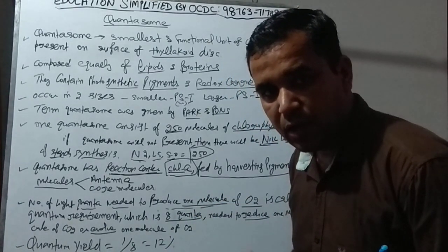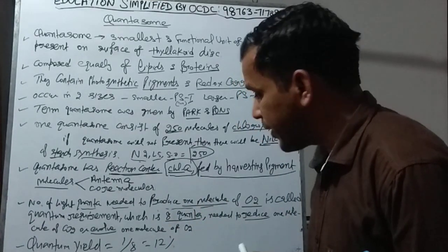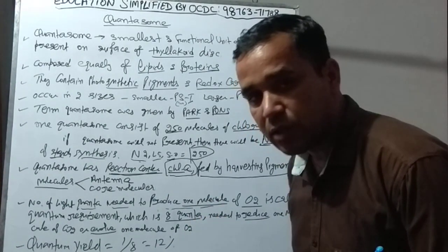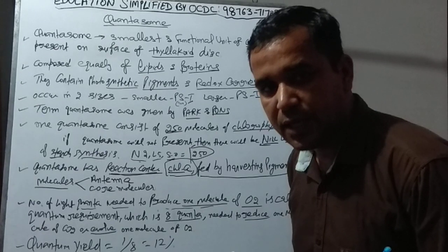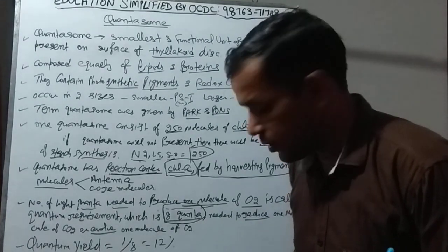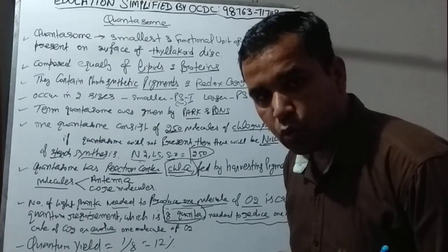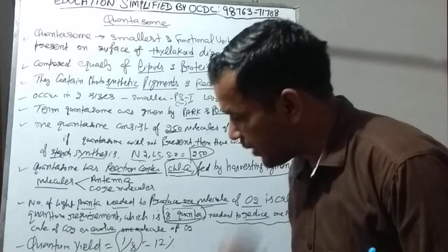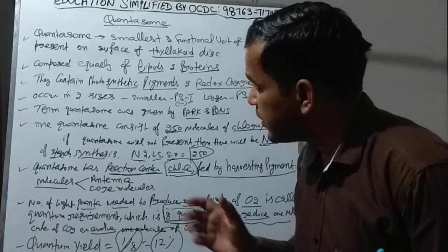The number of light quanta needed to produce one molecule of oxygen in photosynthesis is called quantum yield. To evolve one molecule of O2, a minimum of eight quanta are required. Eight quanta are also needed to reduce one molecule of CO2 — it is the same process. So quantum yield equals one divided by eight, which is approximately 12.5%.